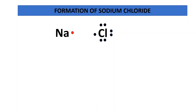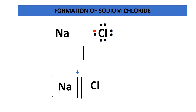As discussed, the sodium atom loses its electron to chlorine. Sodium, by losing the electron, gets converted into a positively charged sodium ion. Chlorine, by gaining the electron from the sodium atom, gets converted into a negatively charged chloride ion. This positively charged sodium ion and negatively charged chloride ion are held together by a force of attraction known as an ionic bond.